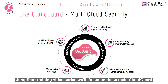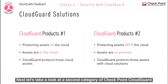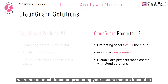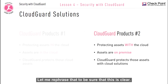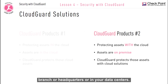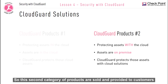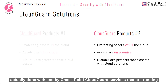In this Jumpstart training video series, we will focus on these main CloudGuard solutions. Next, let's look at the second category of Checkpoint CloudGuard solutions. Here, we're not so much focused on protecting assets located in the cloud, but rather protecting your assets with the cloud — with Checkpoint's CloudGuard services. We are using Checkpoint CloudGuard services to protect customer assets that could be located anywhere: on-premise, in the branch or headquarters, or in your data centers. These products are provided to customers who might not have the necessary local equipment to do access control and threat prevention on-premise, so the protection and inspection are done by Checkpoint CloudGuard services running in the cloud.